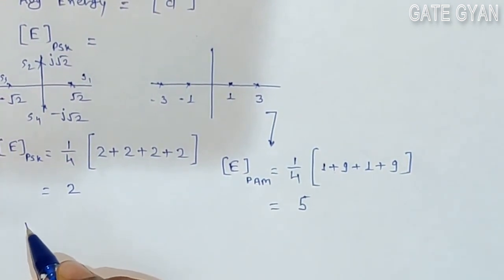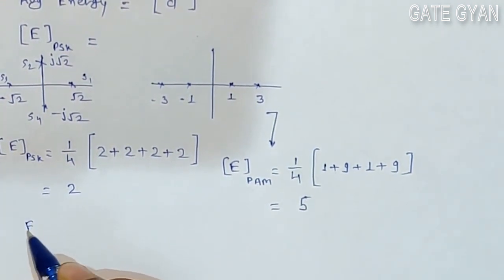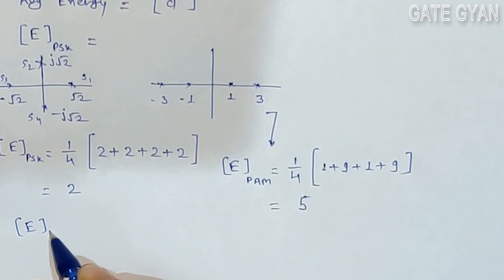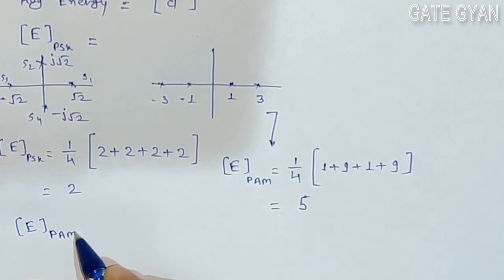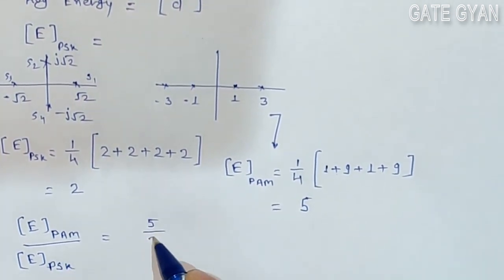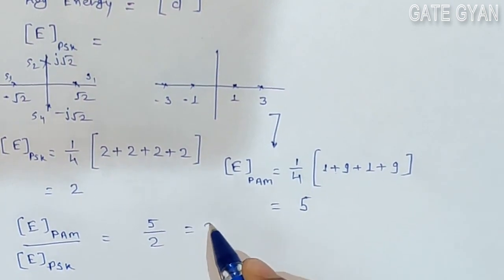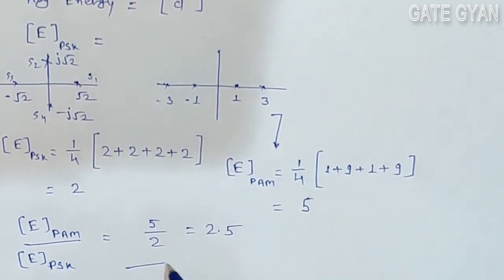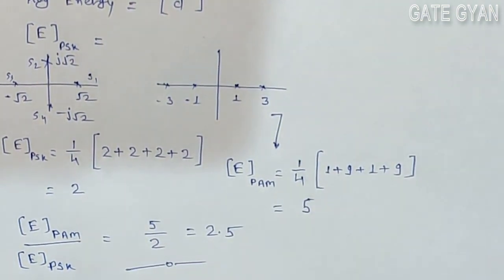What he is asking is the ratio of the average energy of PAM divided by PSK, so it is 5 divided by 2, which is 2.5. So the final answer is option C. Thank you friends for watching.